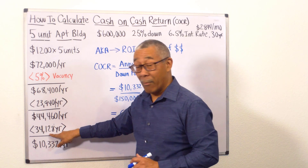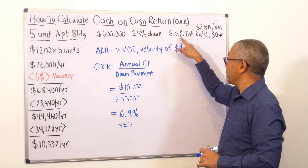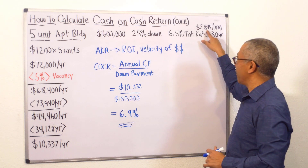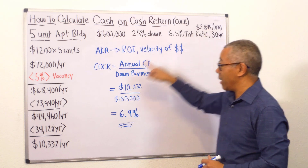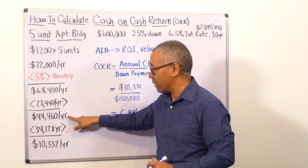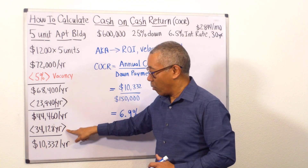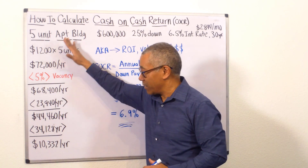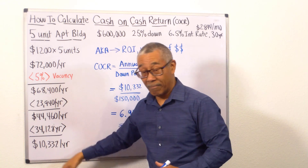Then I subtract my mortgage. My mortgage at 6.5% is $2,844 per month, so $2,844 times 12 equals $34,128 per year. So my NOI minus my mortgage equals my annual cash flow. I have another video that explains this in detail, but that's the cash flow here.